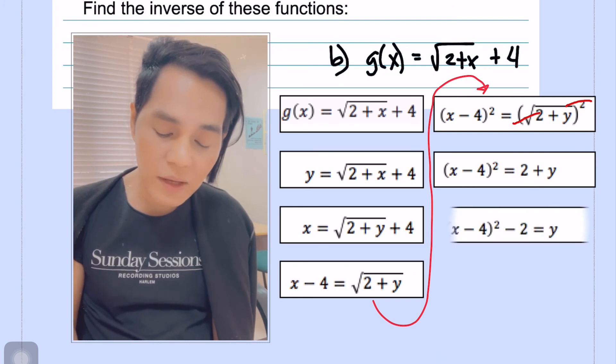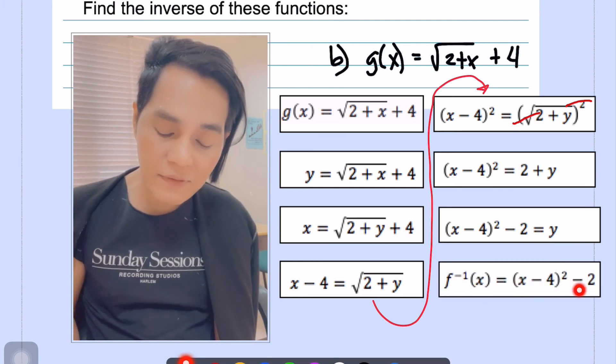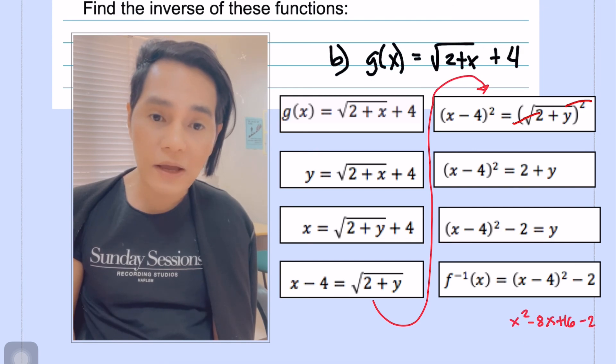And then we are going to transpose 2 on the other side. And so there you go. We are now having y as the subject of the formula. And therefore, this is now the inverse of the given function which is equal to the square of x minus 4 minus 2. We can also expand this, but we can leave this one also as our final answer.